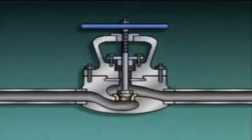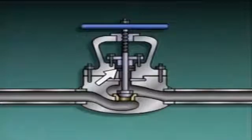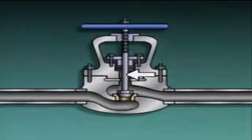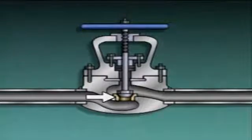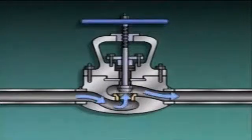Other parts of a valve may include a seating area or seat, a disc, a bonnet, packing material, a packing gland, and a stem with a hand wheel attached to it. The seating area or seat is a stationary part of a valve. It's used with the disc, which is a movable part, to control flow through the valve.